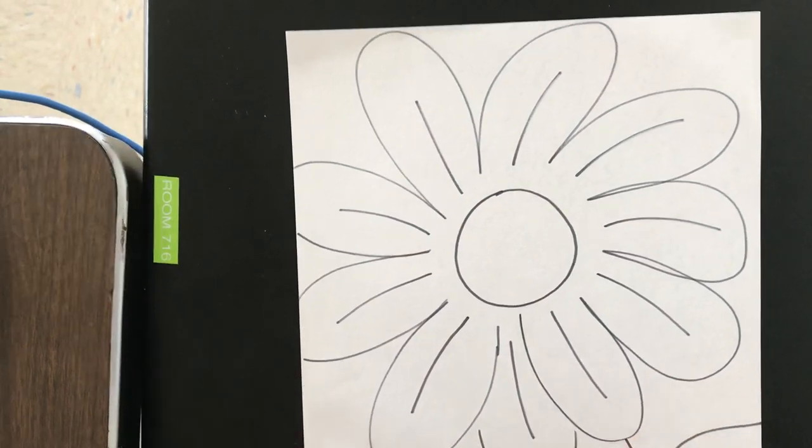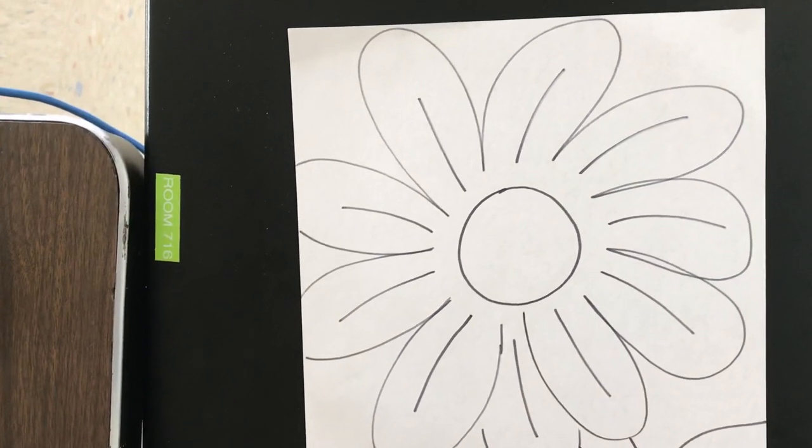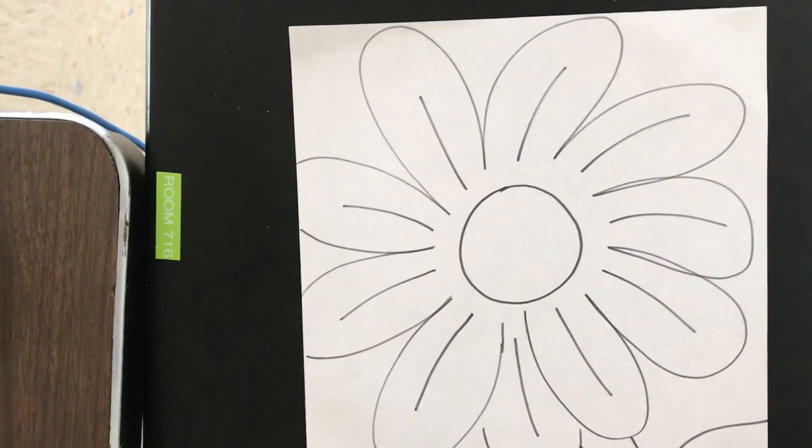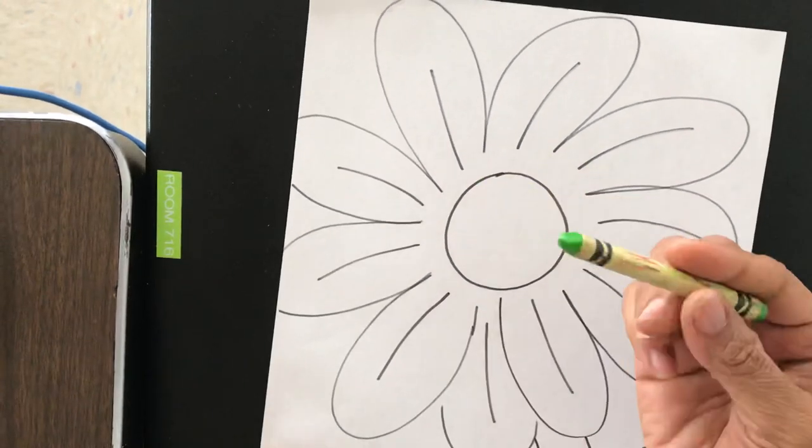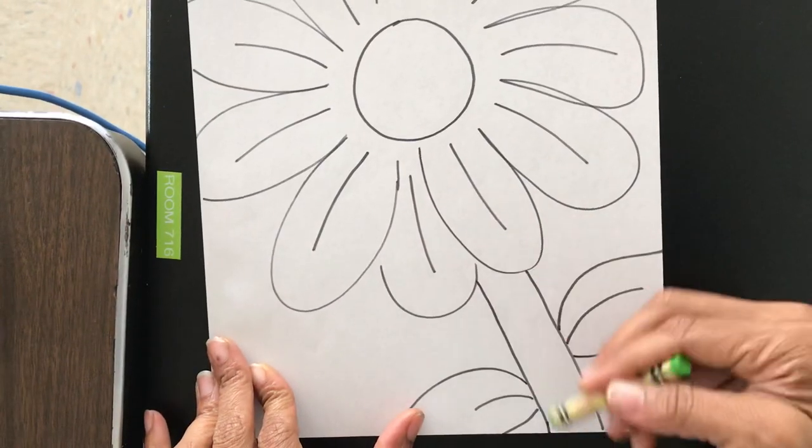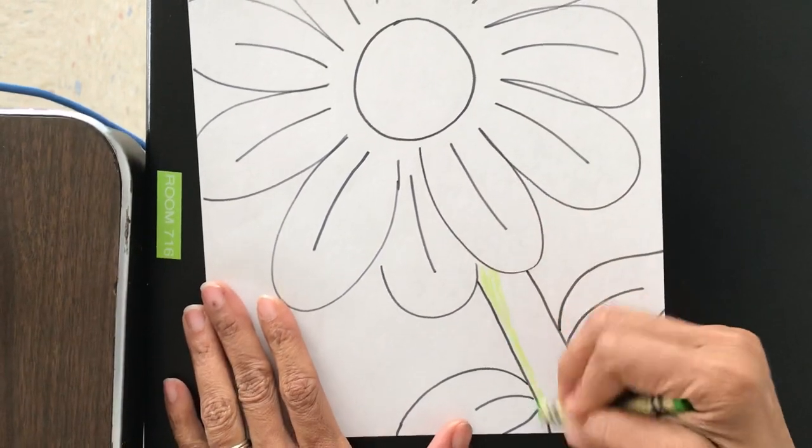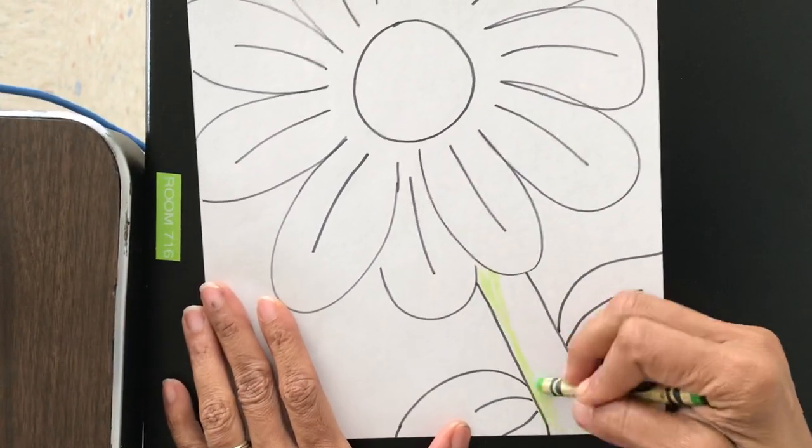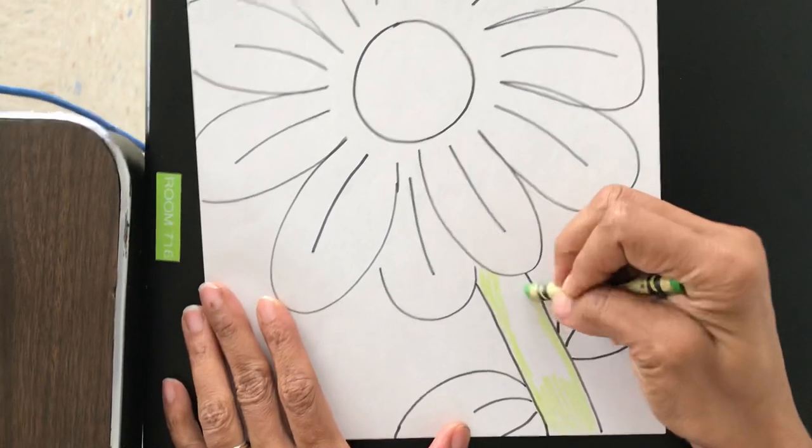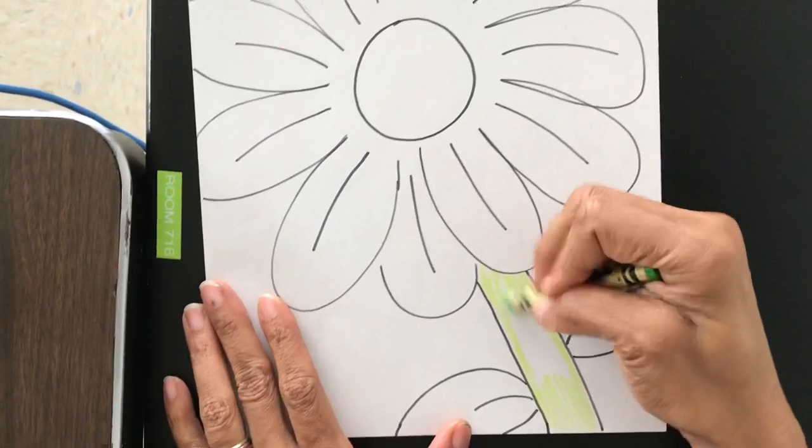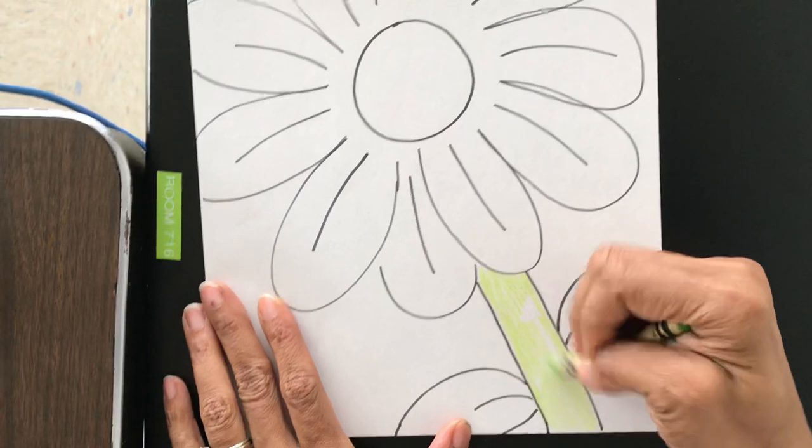So guess what, guys? It is time to color. Yes. Time to color. I'm going to be using green for my stem of my flower. And if you want to use light green, dark green, use whatever color green that you like.